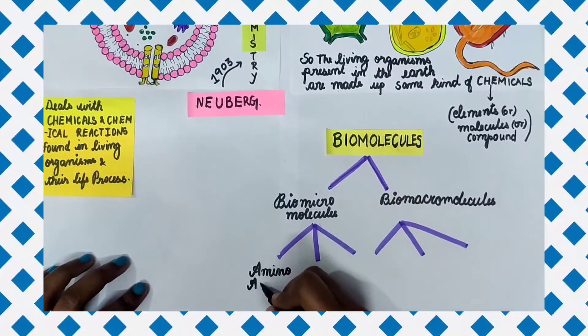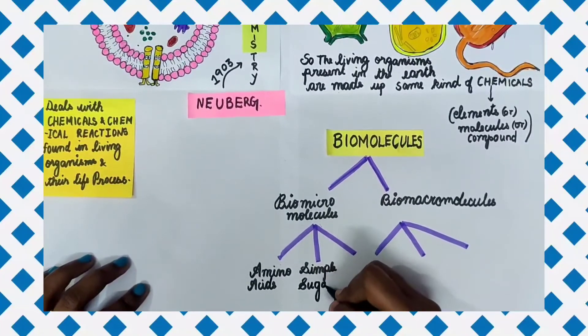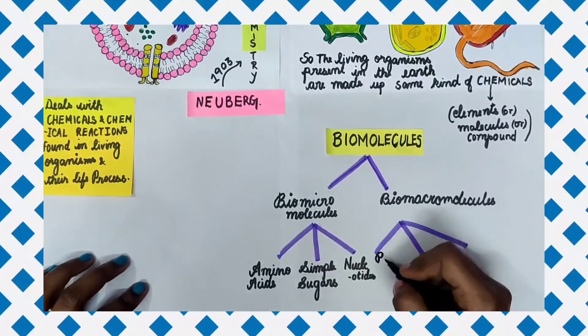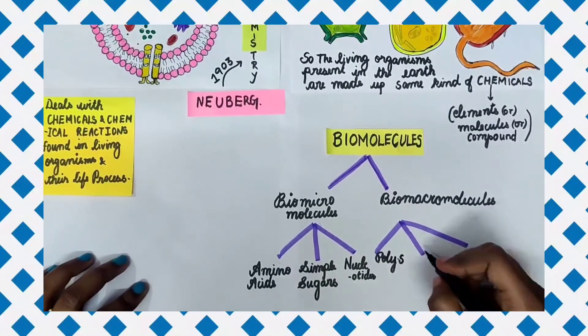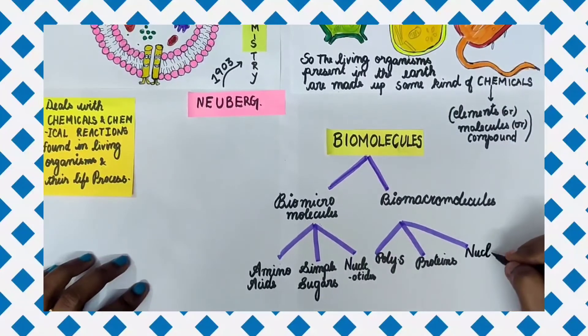Biomicromolecules are further classified into amino acids, simple sugars, and nucleotides. Biomacromolecules are classified into polysaccharides, proteins, and nucleic acids.